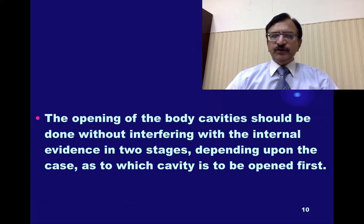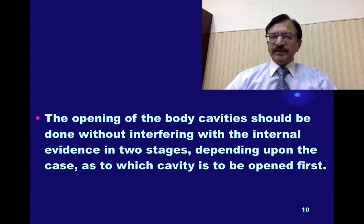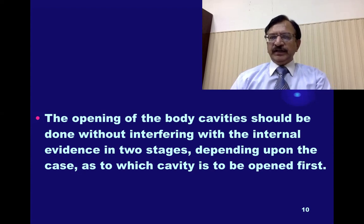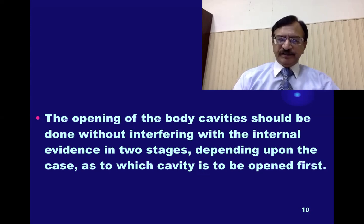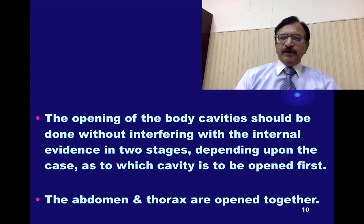The opening of the body cavities should be done without interfering with the internal evidence, in two stages basically, depending upon the case as to which cavity is to be opened first. When we do the internal examination, the original injuries should not be disturbed. We have to open all three cavities, and depending upon the nature of the case, we decide which cavity to open first. The abdomen and thorax are opened together with one incision.